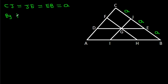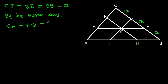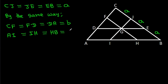In the same way, we can get CF = FD = DA, suppose B. And AI = IH = HB, suppose C.